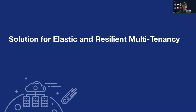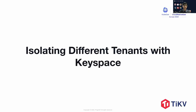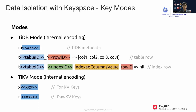Now let's discuss our solution for achieving elasticity and resilience. Our first solution is to use key space to isolate different tenants. To isolate data between different tenants, we use key space with specific key modes. Regarding the TiDB mode, we use the key prefix M for TiDB metadata. For table rows, we use the key format T table_id, R row_id, with the corresponding column values.